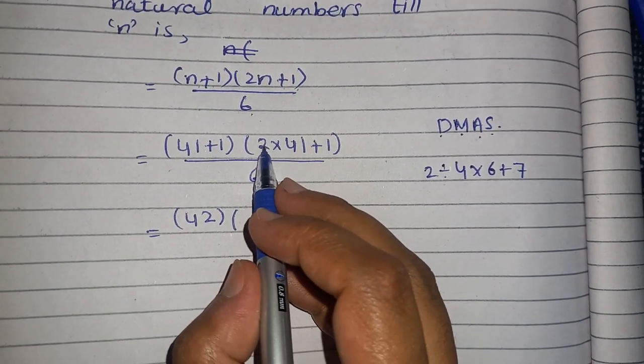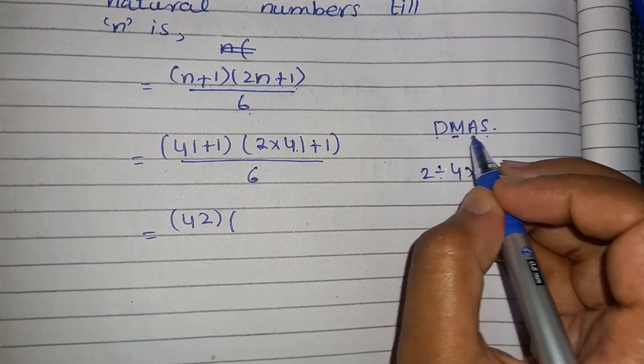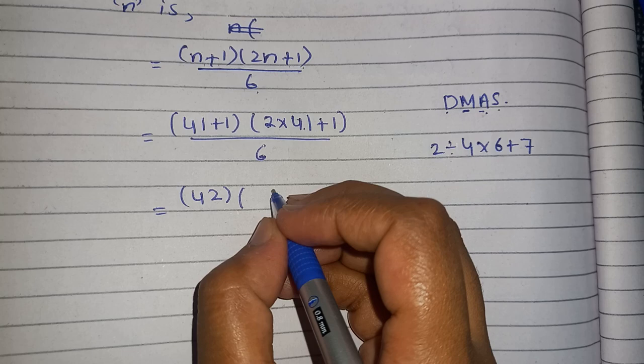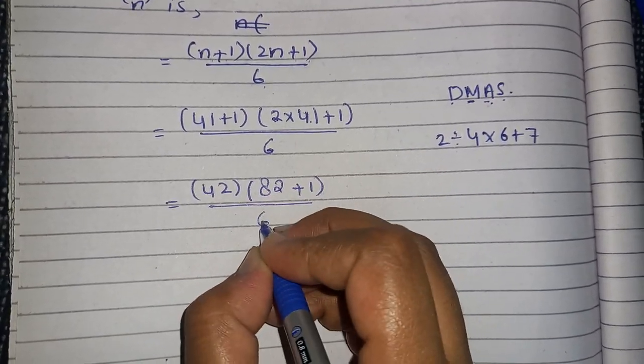Now here, first of all, we will multiply according to this rule because first is multiplication and then addition. So if you multiply, you will get 2 times 4 is 8 and then add it with 1 and then divide by 6.